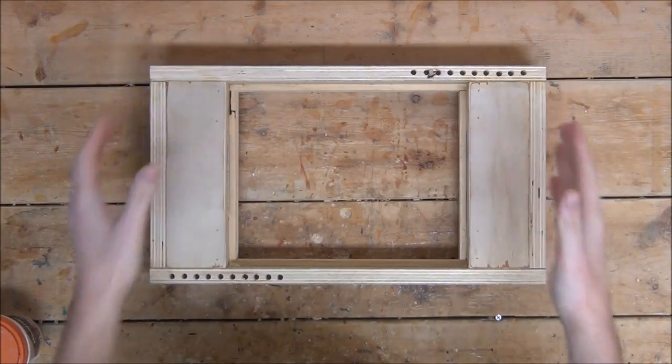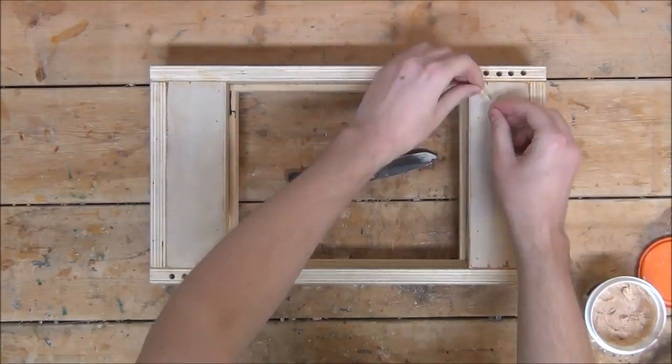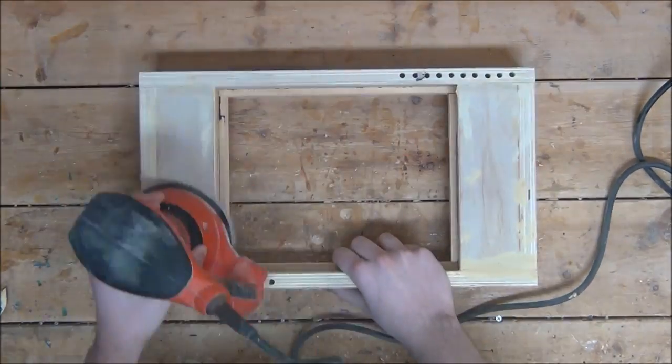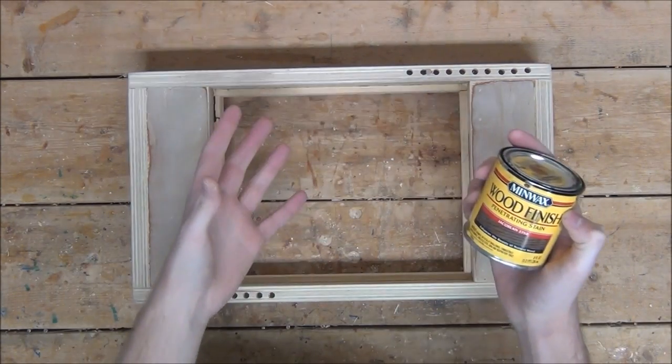Next, I'm going to fill all the exterior nail holes with wood putty, give everything a solid sanding, then take some wood stain, I'm using jacobine, and stain it.